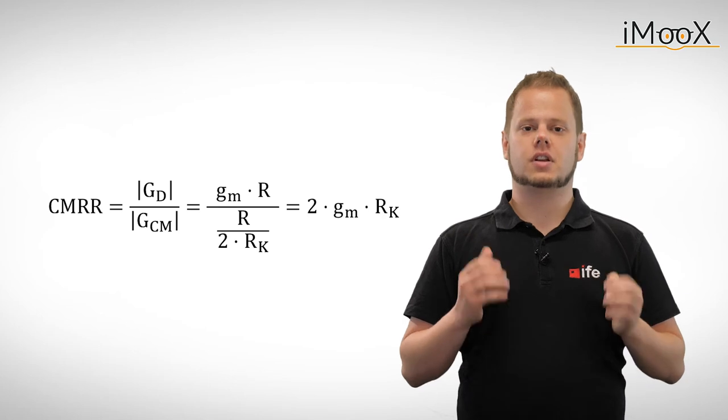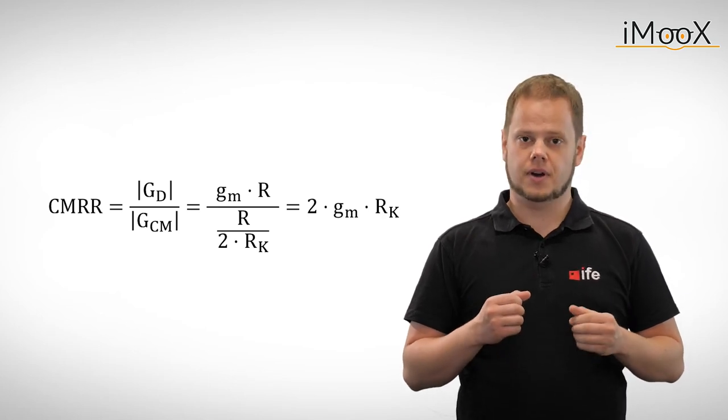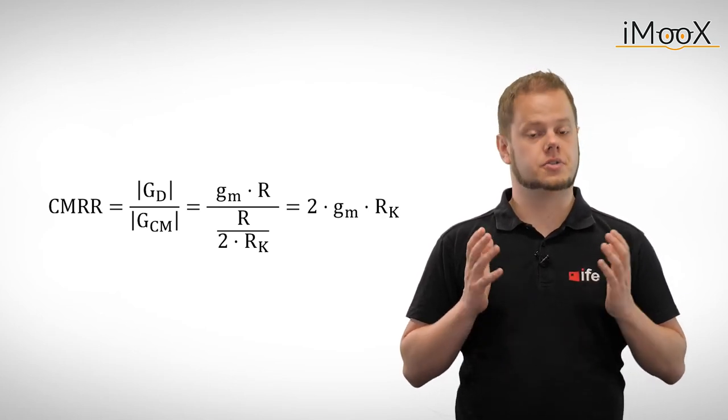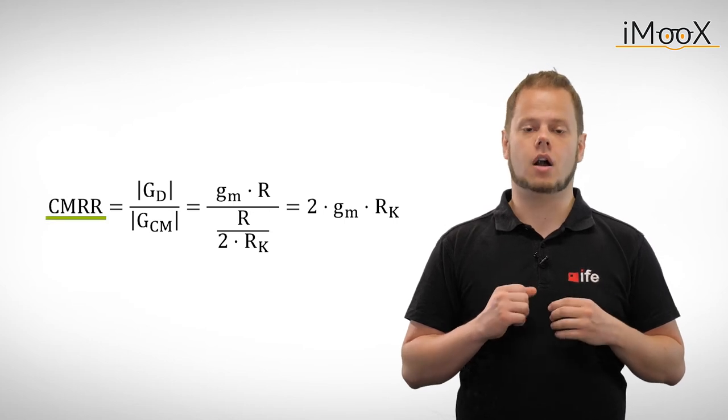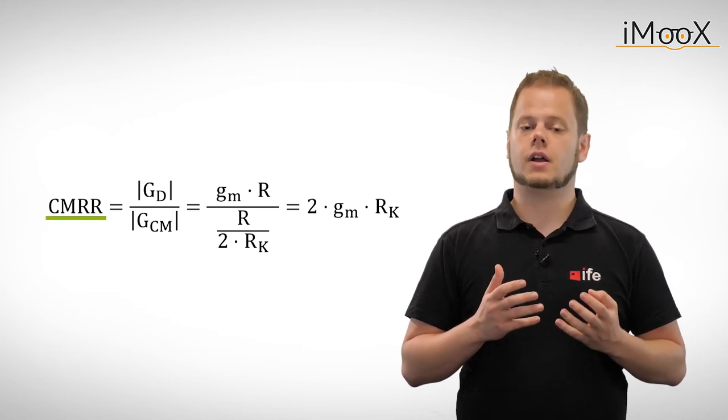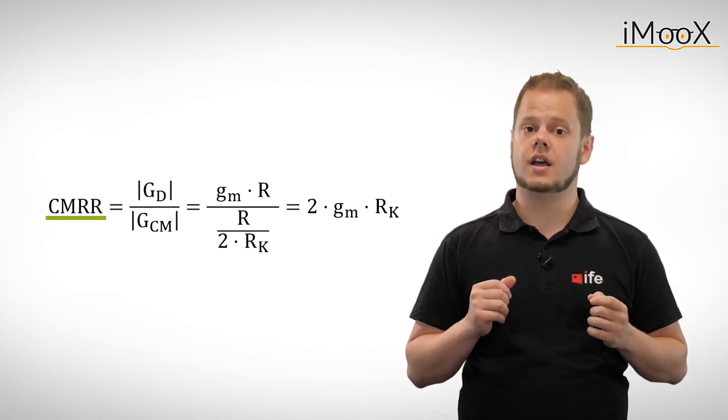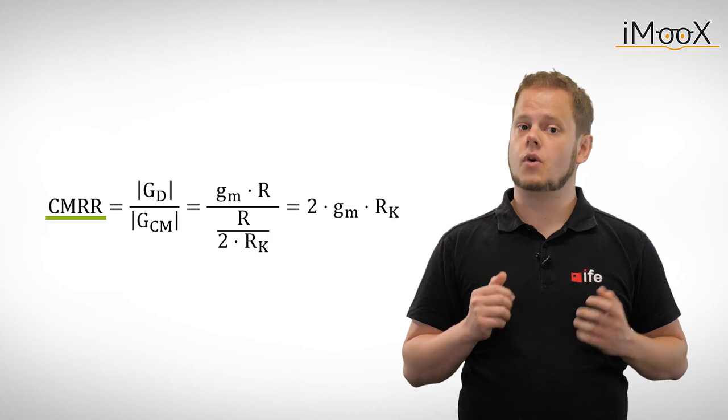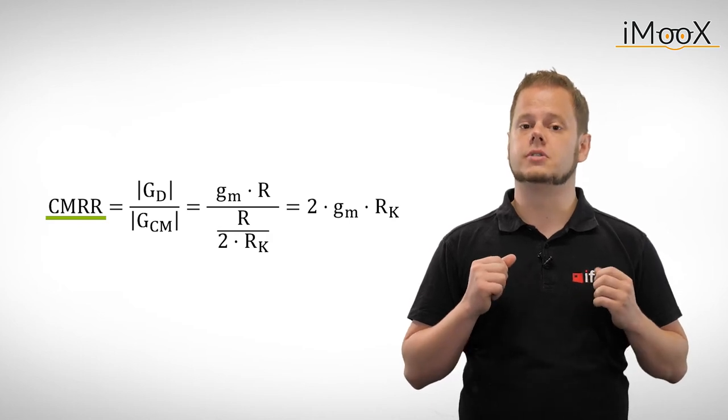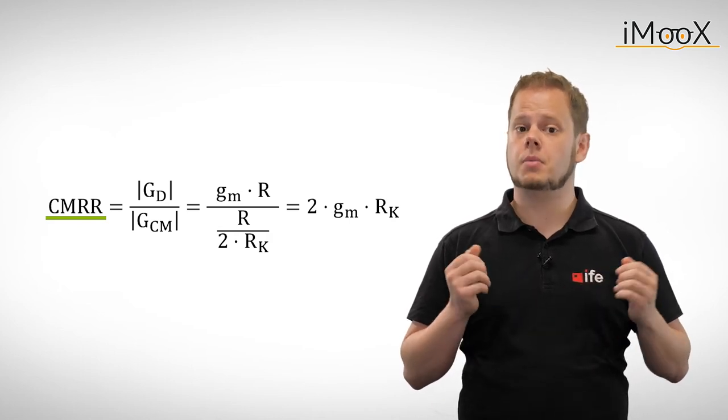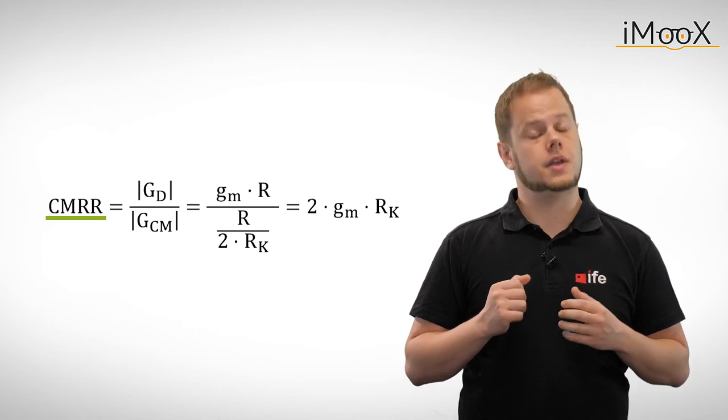An important characteristic for differential amplifiers is the common mode rejection ratio, or CMRR for short. The common mode rejection ratio is a measure of how well the amplifier can detect differences in input voltages while attenuating common mode signals. The higher the common mode rejection ratio, the better the amplifier.